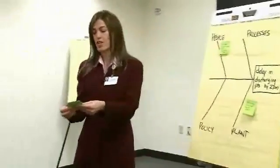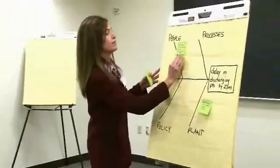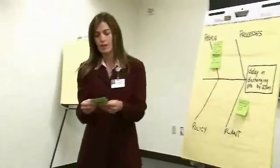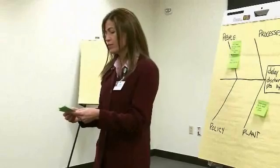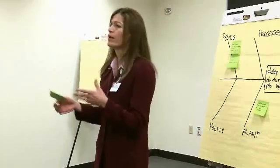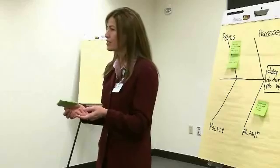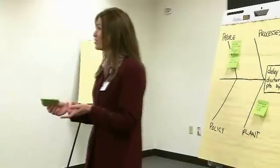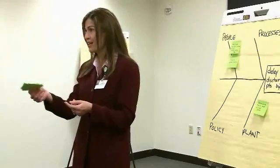How about change in patient condition? That goes under people also. The next one is arrangements for home care. Someone tell me more about why arrangements for home care would be causing a delay in discharge. Sometimes we have a patient that doesn't need to go to a nursing home but does need assistance in the home — it could be either nursing care or equipment needs. Those are actually two sub-causes: nursing care needs and equipment needs.